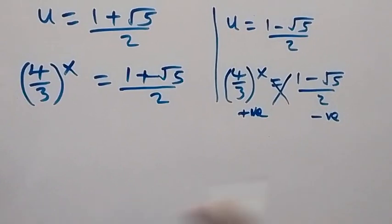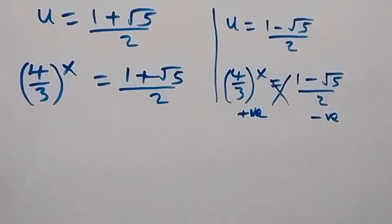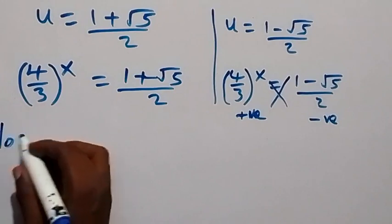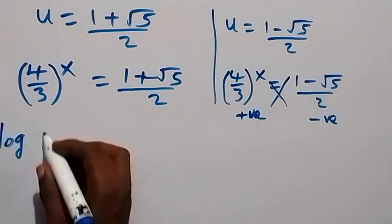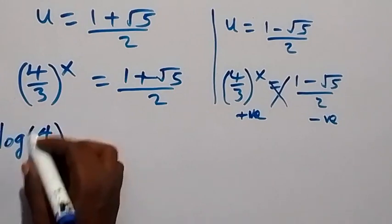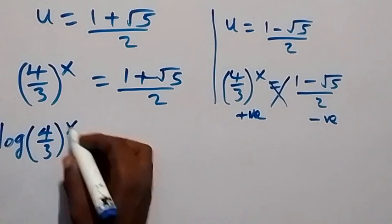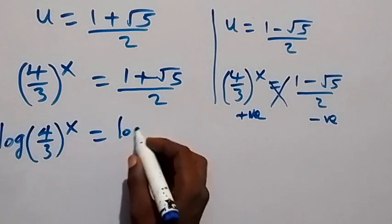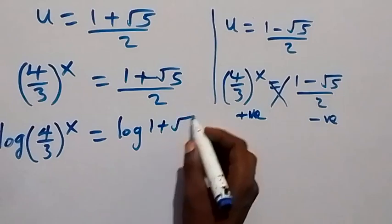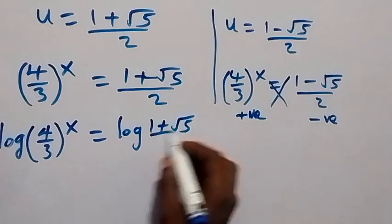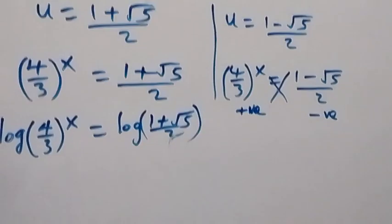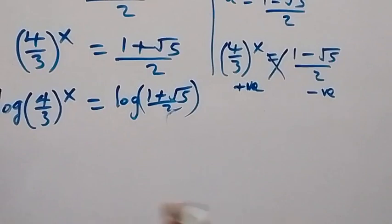For the valid case, we apply log to both sides: log of (4/3) raised to power x equals log of (1 plus root 5) over 2.